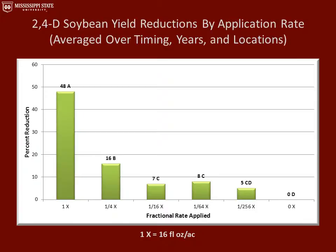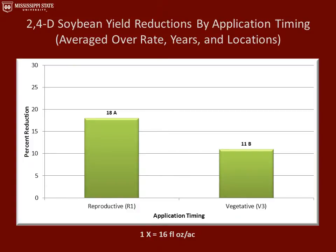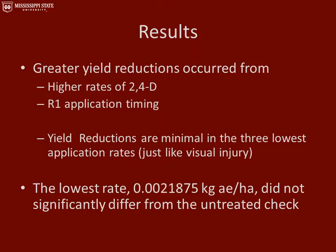This graph represents the yield reductions by application rate, averaged over all timings, years, and locations. With the 1x rate, we had a 48% yield reduction. With our lowest rate, we had a 5% yield reduction, which was not significantly different from the untreated check. These are the yield reductions by application timing, averaged over all rates, years, and locations. Treatments that received the application at the R1 growth stage had an 18% yield reduction, and those at the V3 growth stage had an 11% yield reduction. Yield reductions were minimal in the three lowest application rates, and the 1/256x rate did not significantly differ from the untreated check.